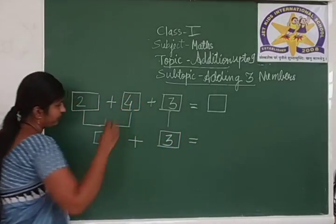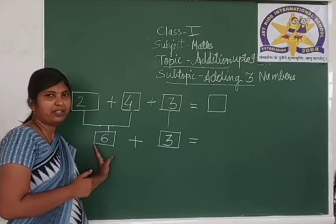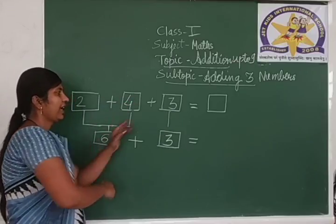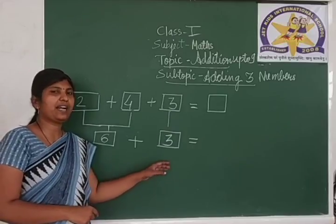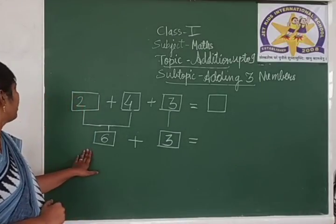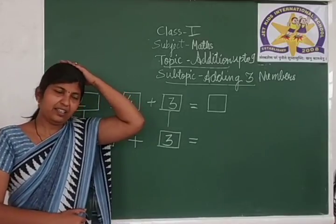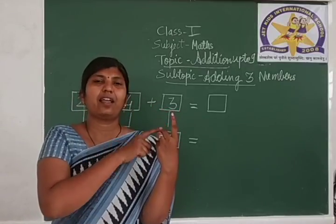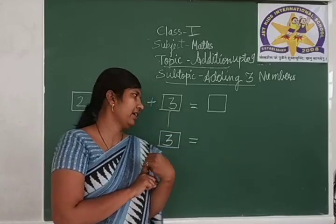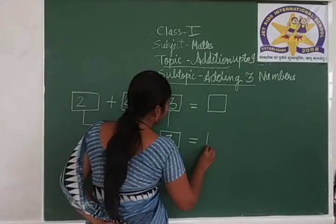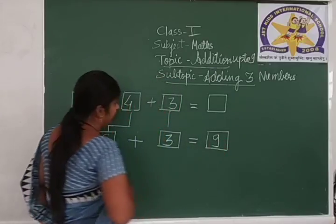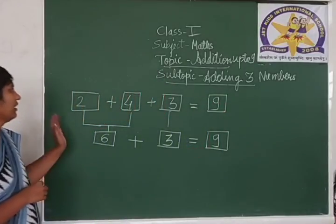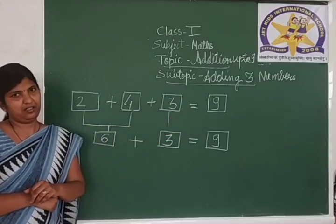Take 3 down. Now we have 2 numbers: the sum of 2 and 4, which is 6, and the remaining number 3. Now we are going to add these 2 numbers using the same procedure. 6 in your mind and 3 on your fingers. Count forward: 7, 8 and 9. So the answer is 9. Write down 9 here also. 2 plus 4 plus 3 equals 9.